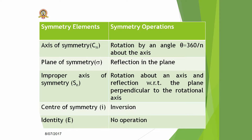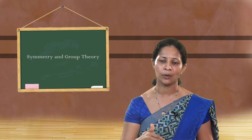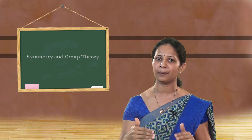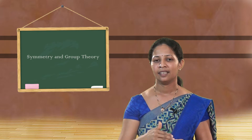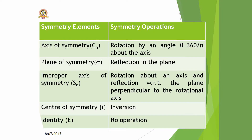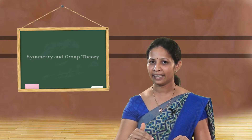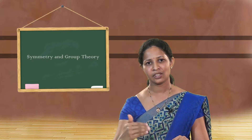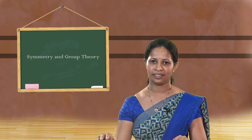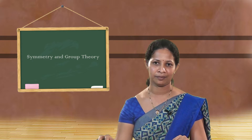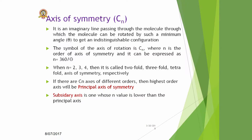The fourth element is the center of symmetry, and the corresponding operation is the inversion operation. The fifth element is identity. The identity element means doing nothing — there is no operation performed.